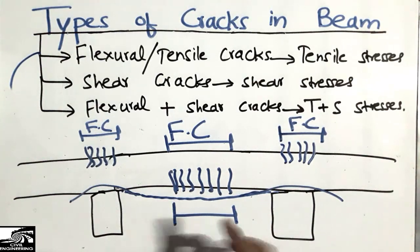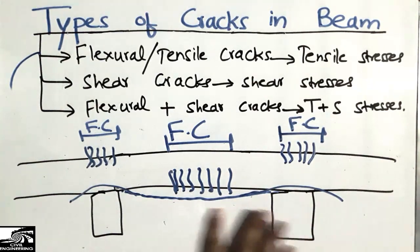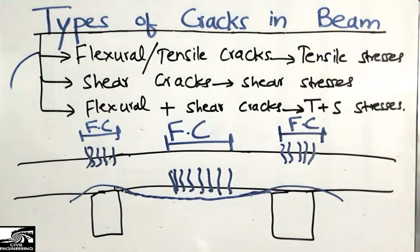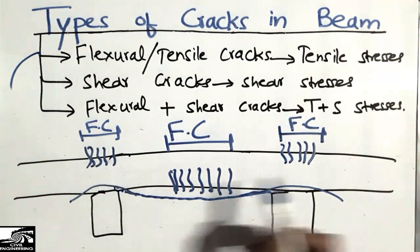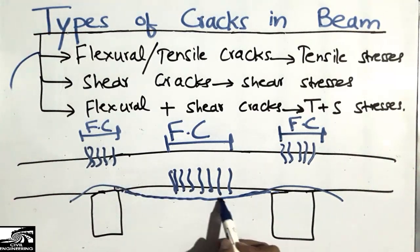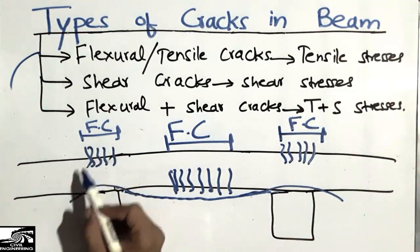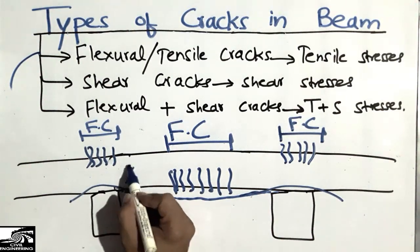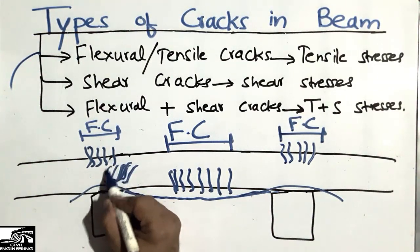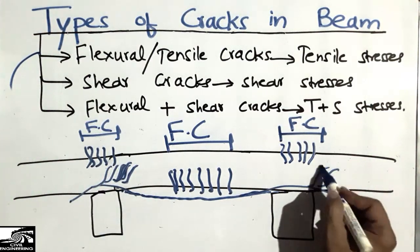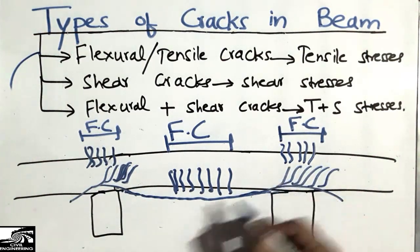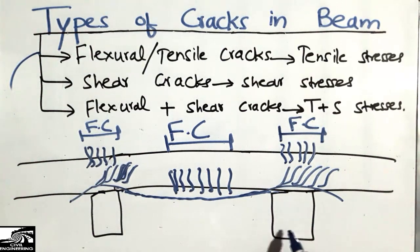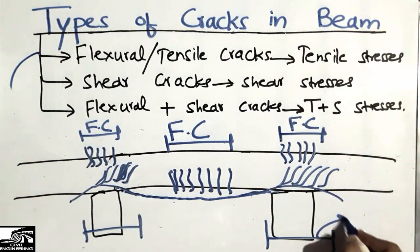Now coming to the shear cracks. As shown in the shear diagram, shear is maximum at the supports and zero at the midpoint. Due to maximum shear at the supports, shear cracks develop there at 45 degrees — this is the behavior of shear failure. We call this the shear crack location, which is the second type of crack, caused by maximum shear stresses at those points.